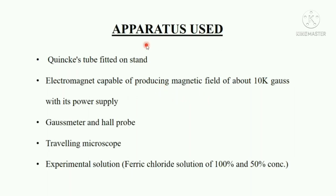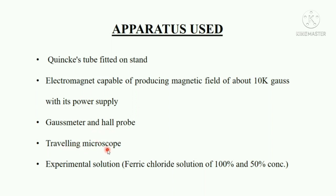The apparatus we will be using are: a Quinke's tube fitted on a stand, which is a U-tube — one limb of it is narrow and the other is broad; an electromagnet capable of producing a magnetic field of about 10 kilo-gauss with its power supply; a gauss meter and hall probe; and a traveling microscope to measure the rise in liquid level.